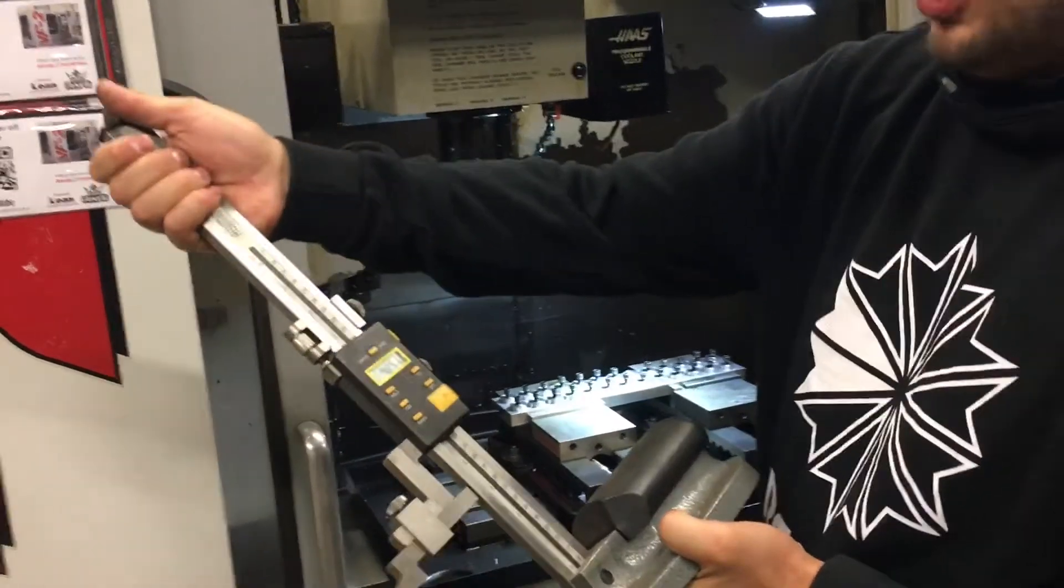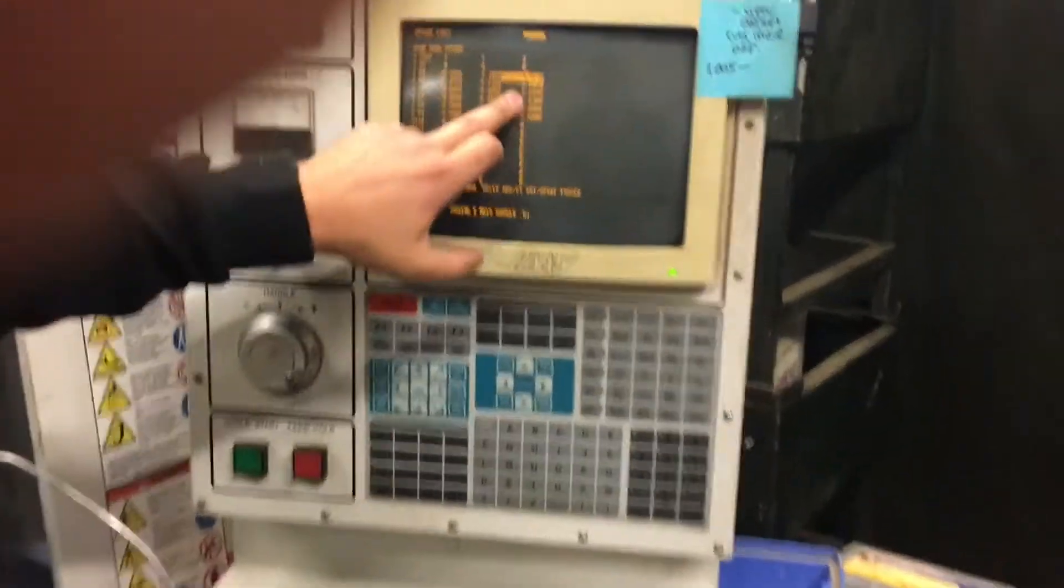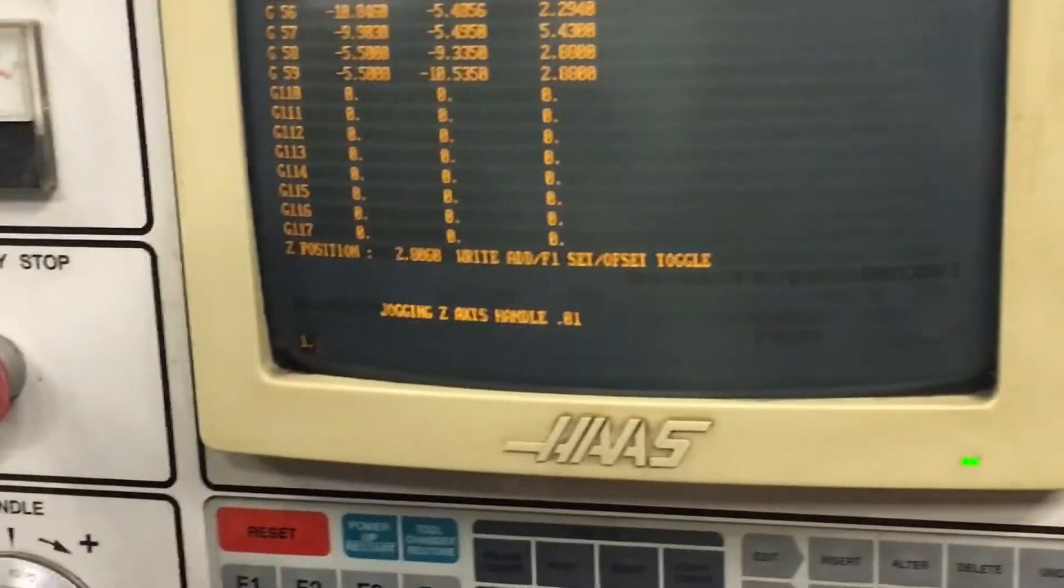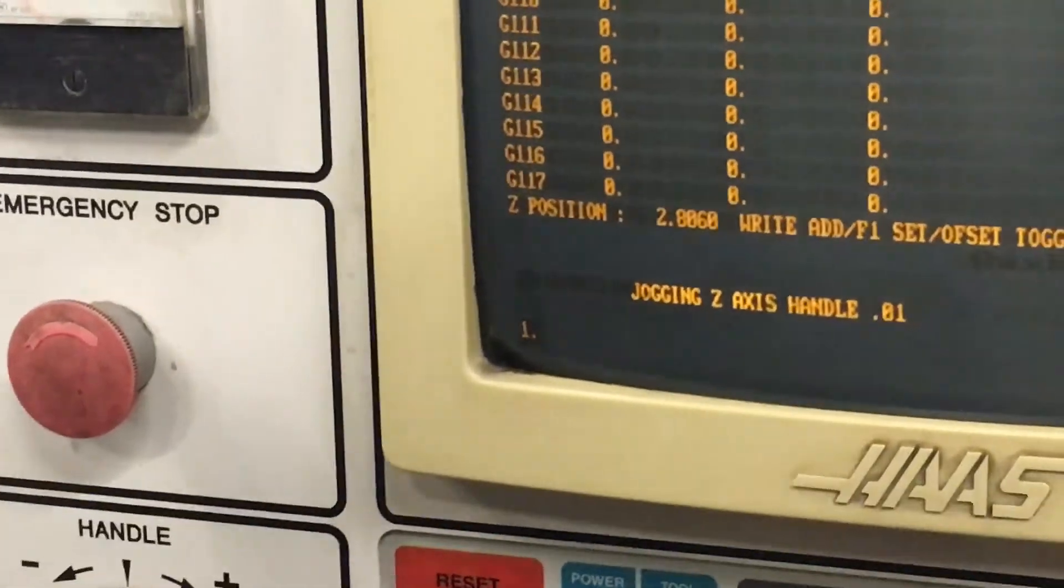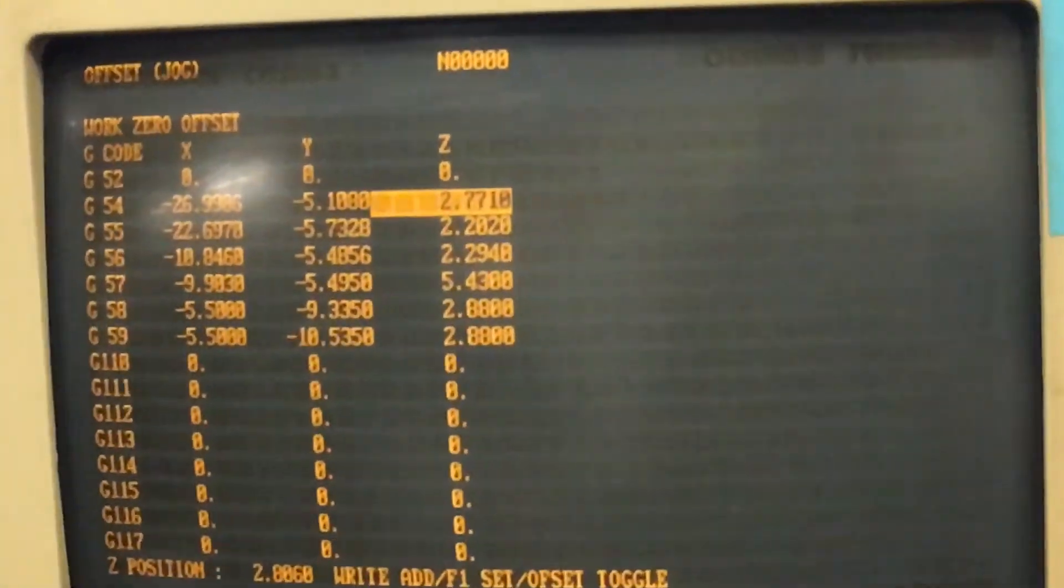So right here in your Z, this is usually a positive number, one point eight five seven, and you click F1. There you go. So we're all set up to go.